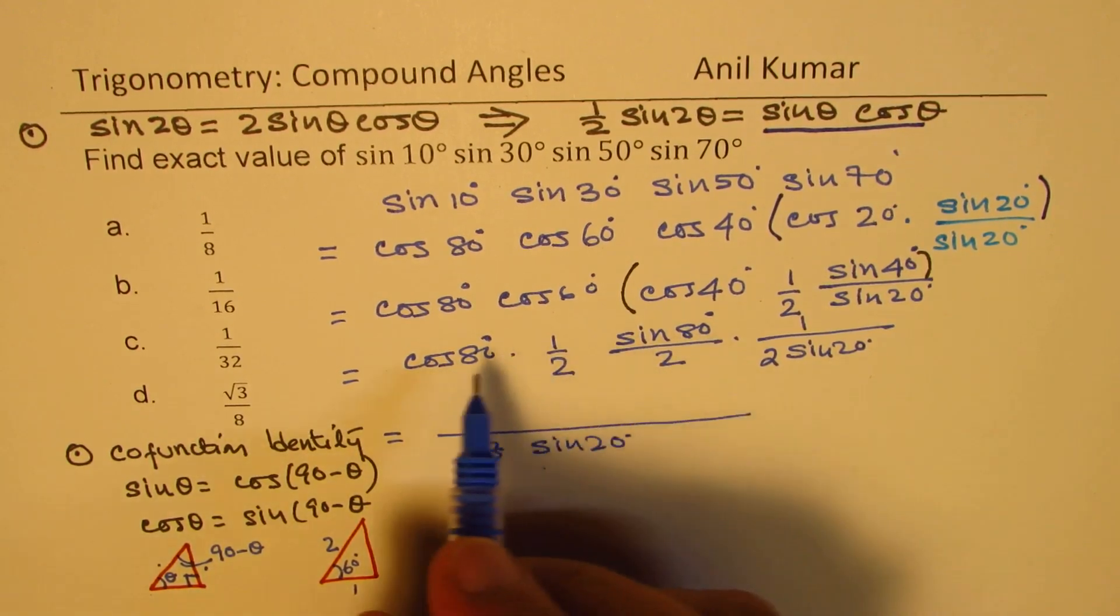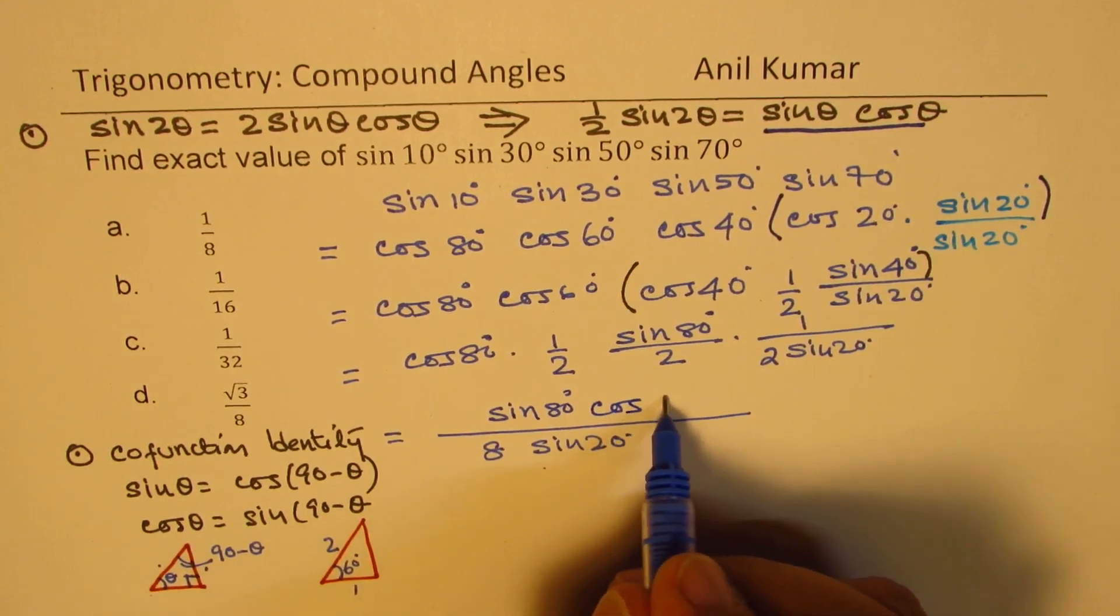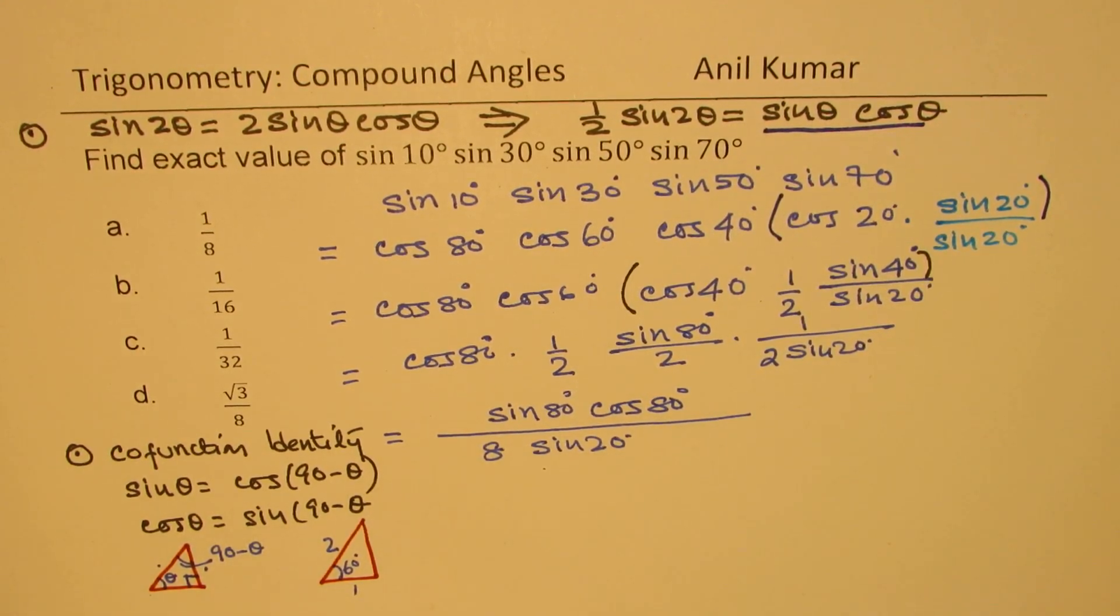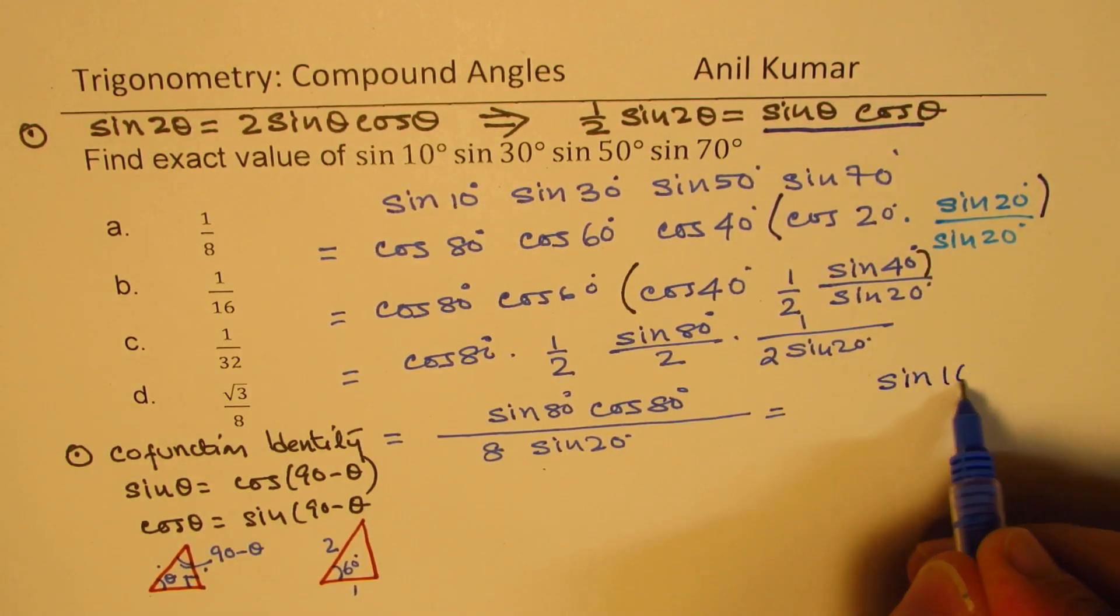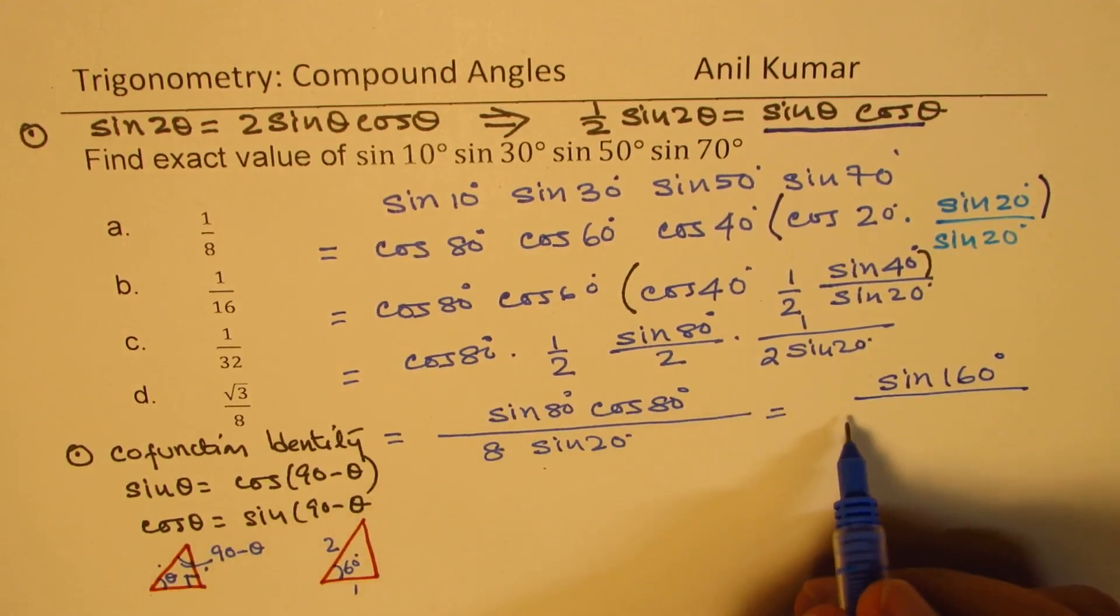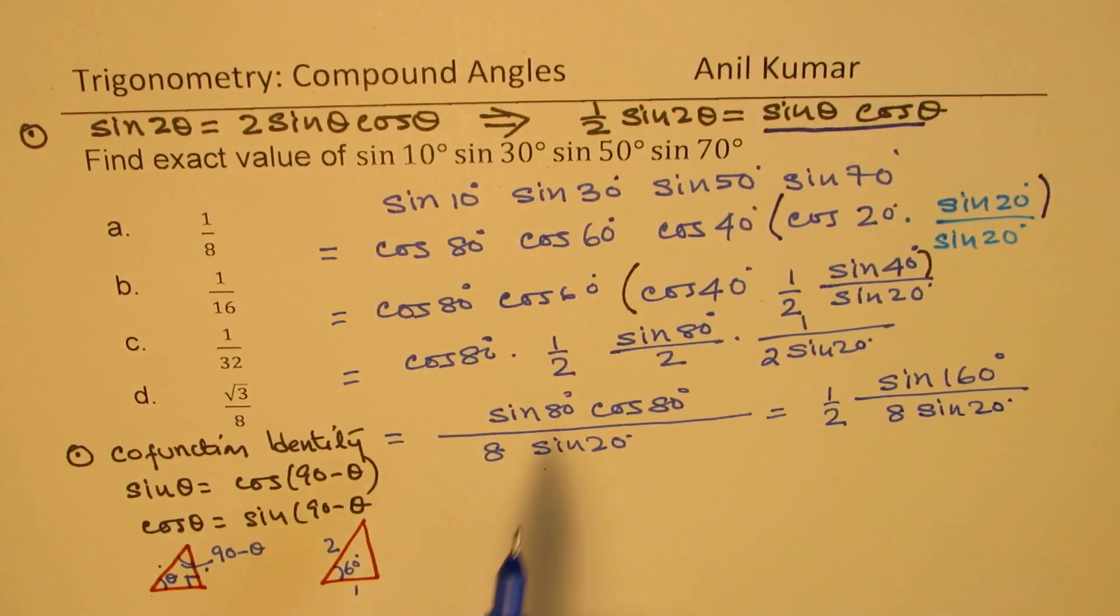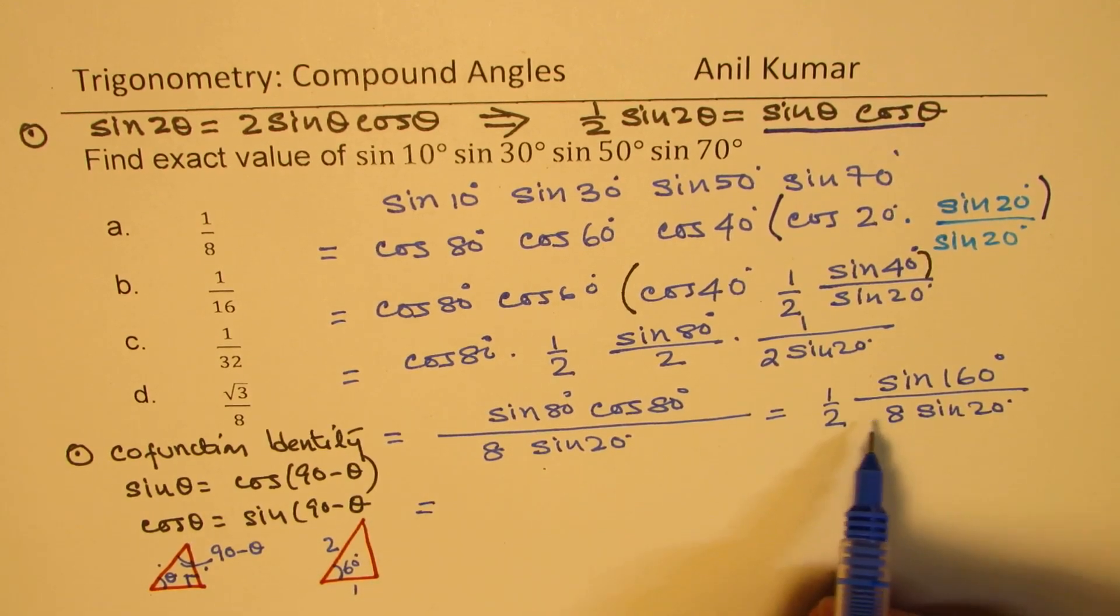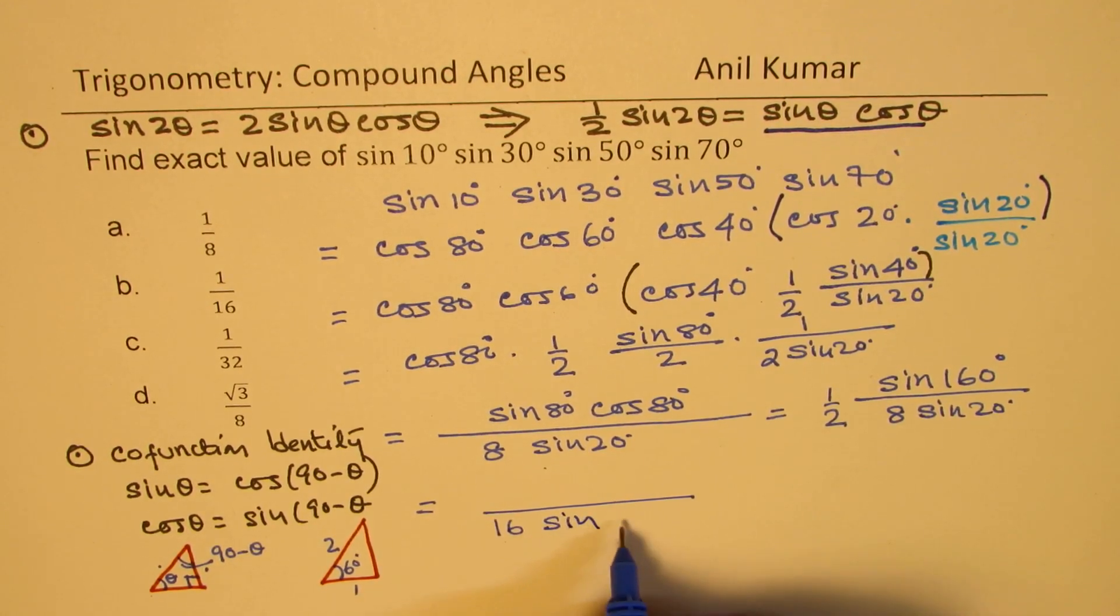In the numerator, we have sin 80 and cos 80. Let me write this as sin of 80 degrees times cos of 80 degrees. Again, we can use this formula. Using this formula, the numerator now becomes double of 80, that is sin of 160 degrees over half, times half, and we already have 8 times sin of 20 degrees. So, sin theta cos theta is half of sin 2 theta. We are applying this formula a couple of times. We get here in the denominator 16 sin of 20 degrees.